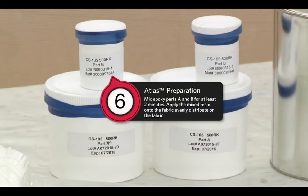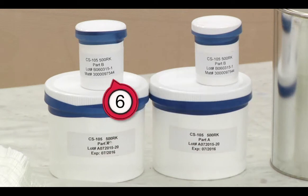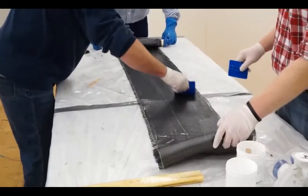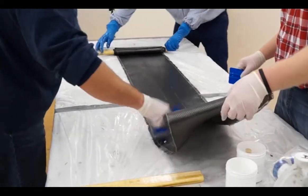Atlas Preparation: Mix epoxy parts A and B for at least 2 minutes. Apply the mixed resin onto the fabric and distribute evenly. Roll up the fabric and transfer to the prepared pipe.